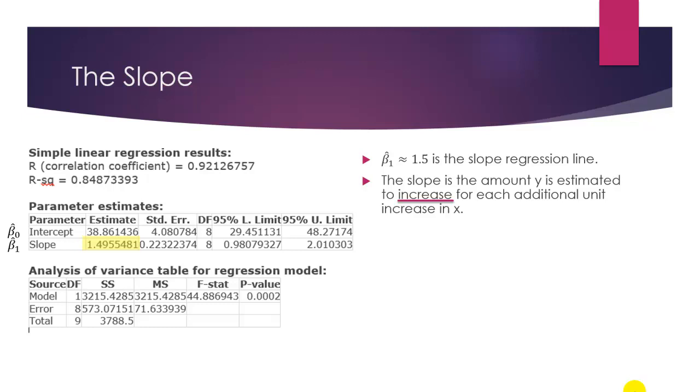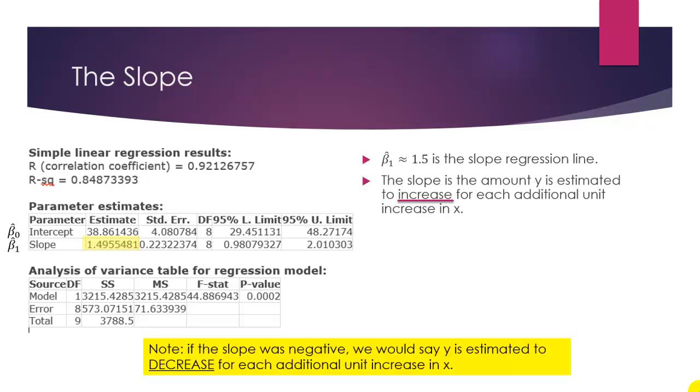I'm saying increase here because our slope is positive. If the slope was negative, we would replace that first increase with decrease. So, we would say generically that we estimate y to decrease by whatever that slope is for every one unit increase in x.